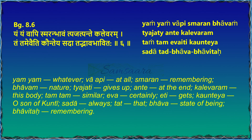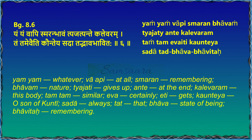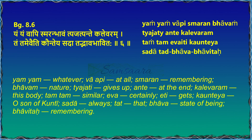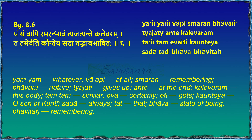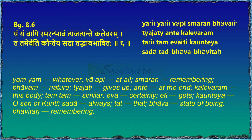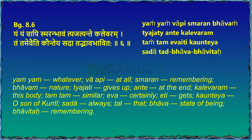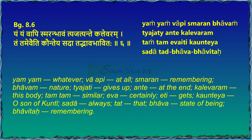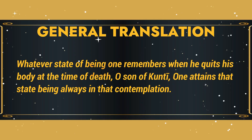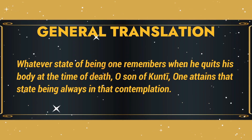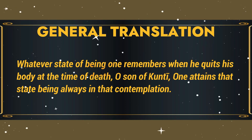Shloka 6 meaning: Yam Yam Vapi Smaran Bhavam - whatever a person is thinking all the time - Tyajati Ante Kalebaram - he will give up the body thinking about that - Tam Tam Eva Eti Kaunteya - that only he will get, O Arjuna. Sada Tad Bhava Bhavitaha - therefore always be absorbed in the contemplation of that supreme reality; that should be your only focus. General translation: whatever one remembers upon giving up the body at the time of death, O son of Kunti, one attains that state. Being always absorbed in such contemplation.